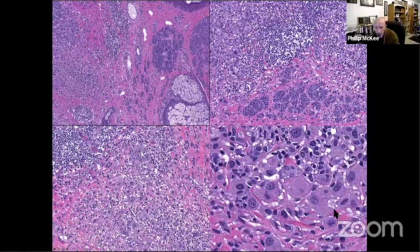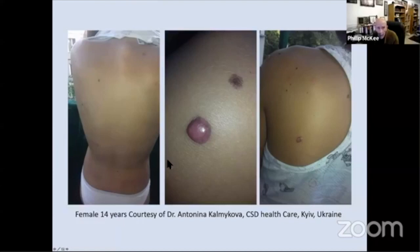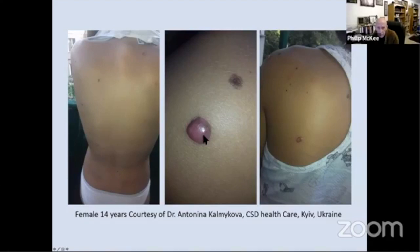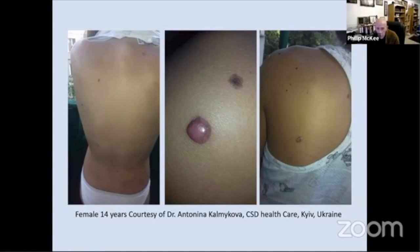This is a patient that Antonina shared with me — a girl of 14 who has nine or ten or even more of these lesions now, and they all show exactly the same morphology. She had full investigations and there's no evidence that she has a germline mutation. I don't know what's going to happen to her, whether she just continues getting these lesions or whether she's at risk for something else. I suppose time will tell. She'll be very carefully followed up.